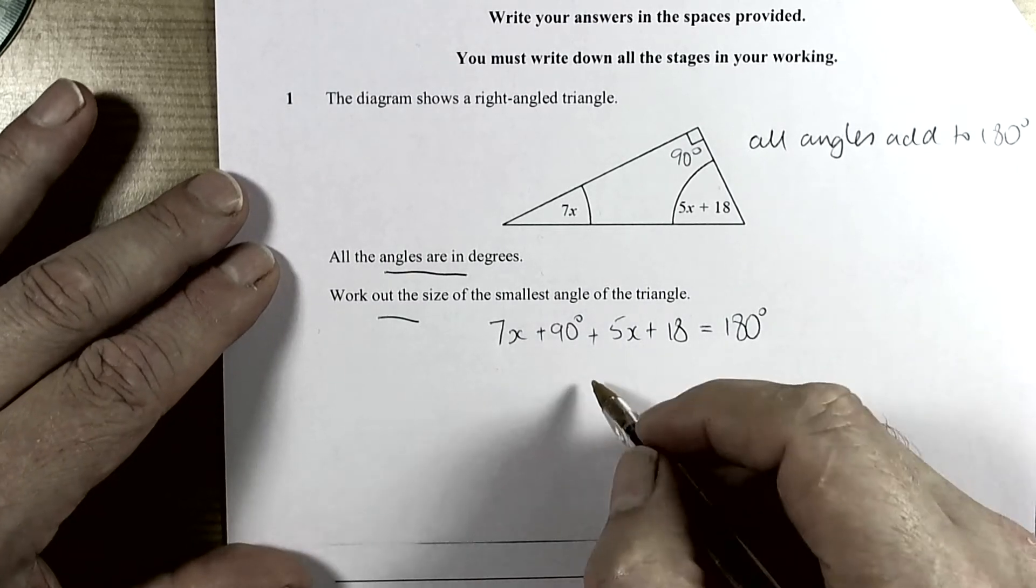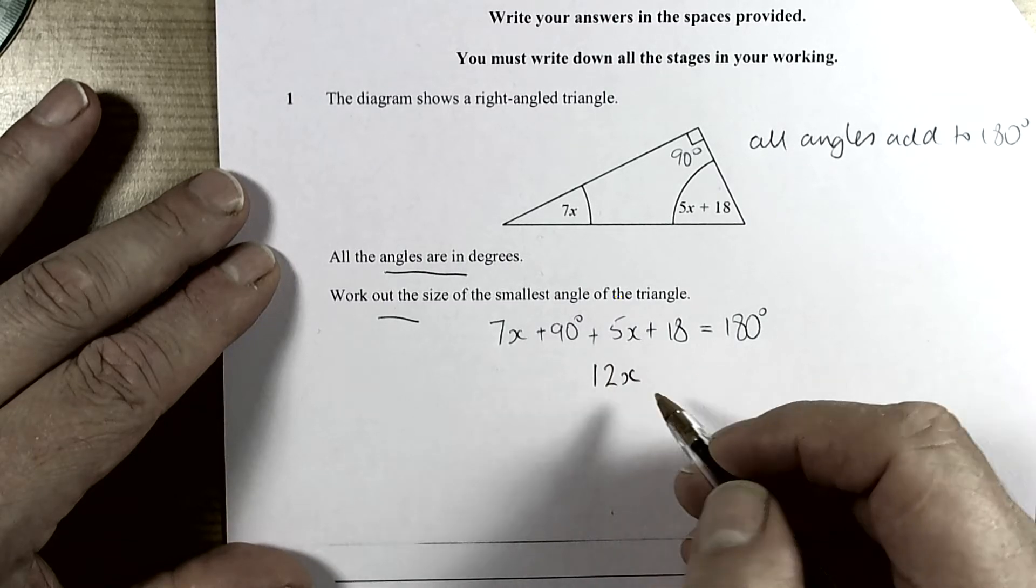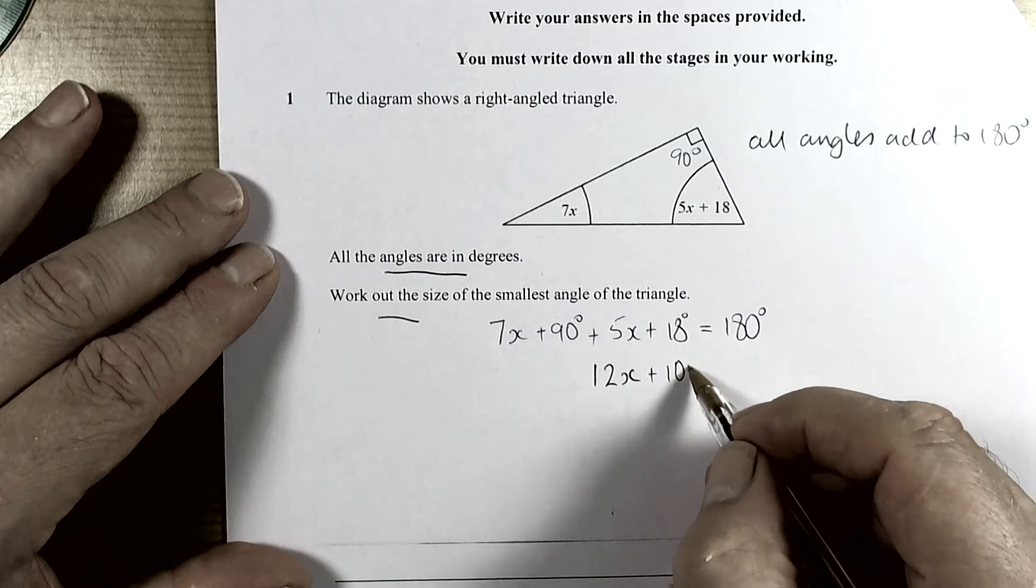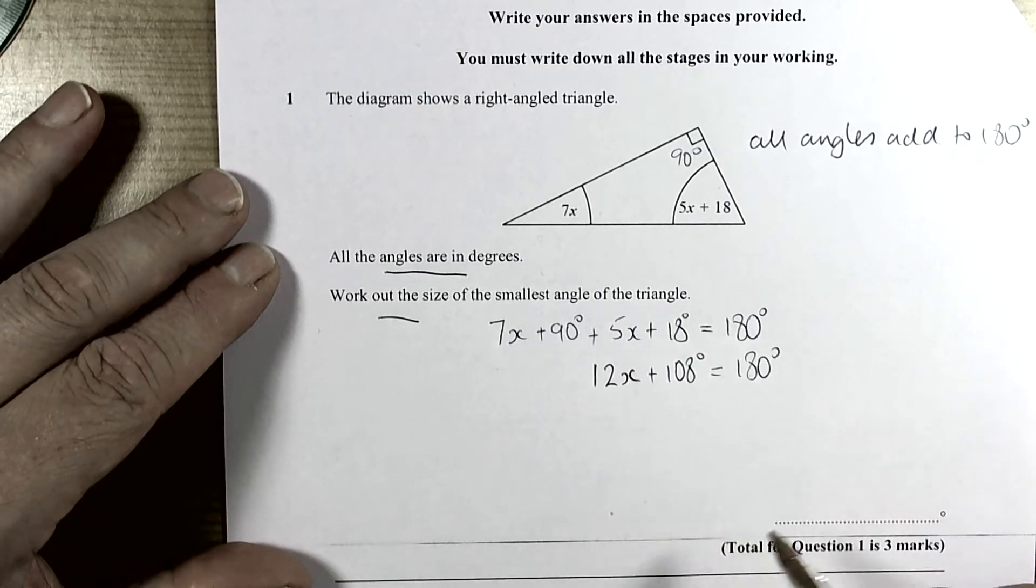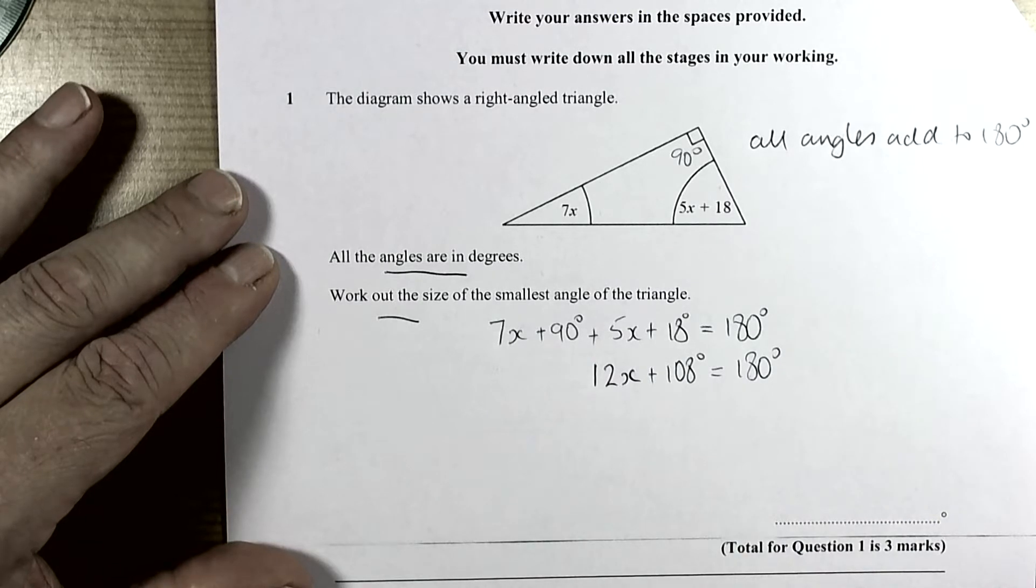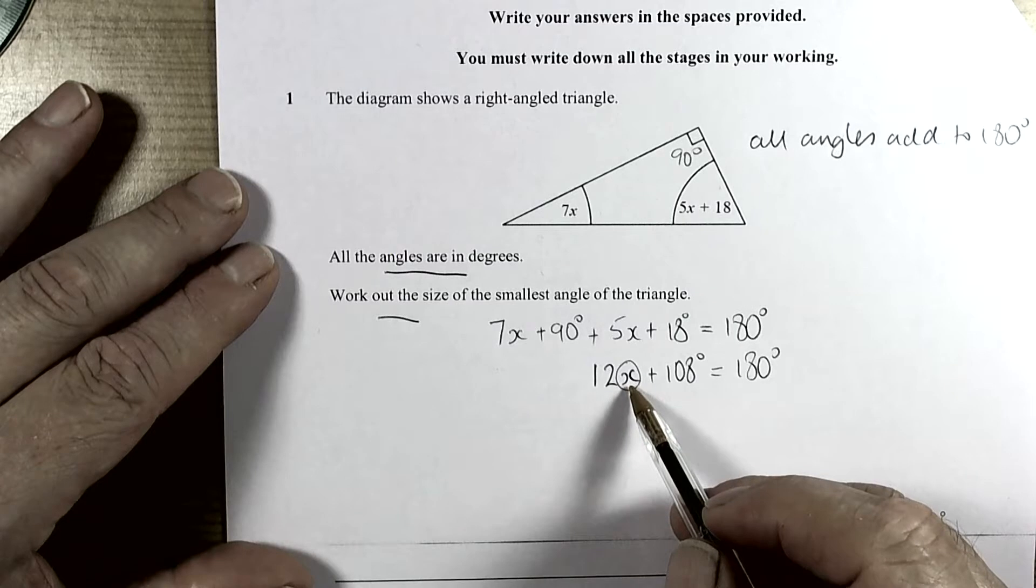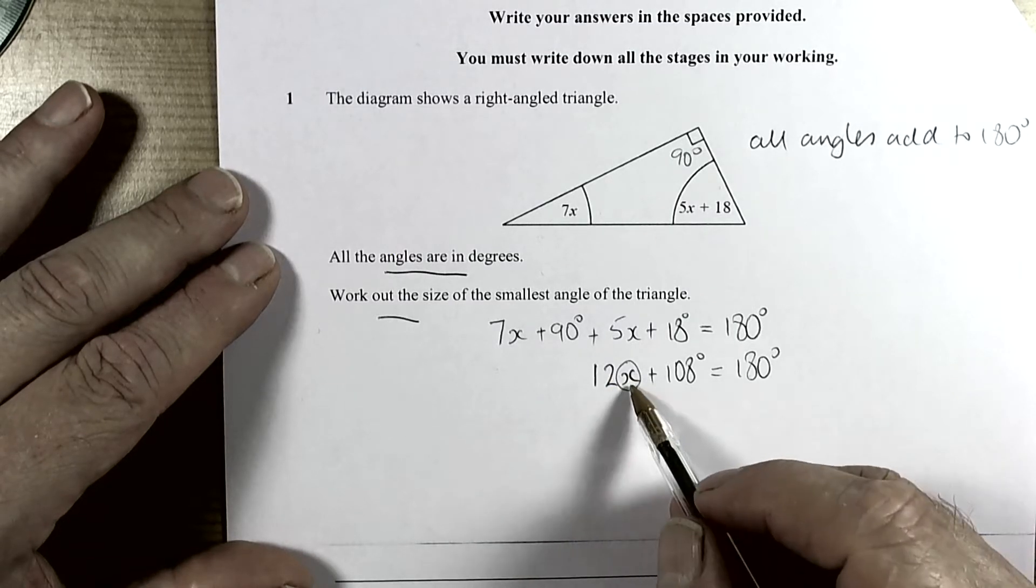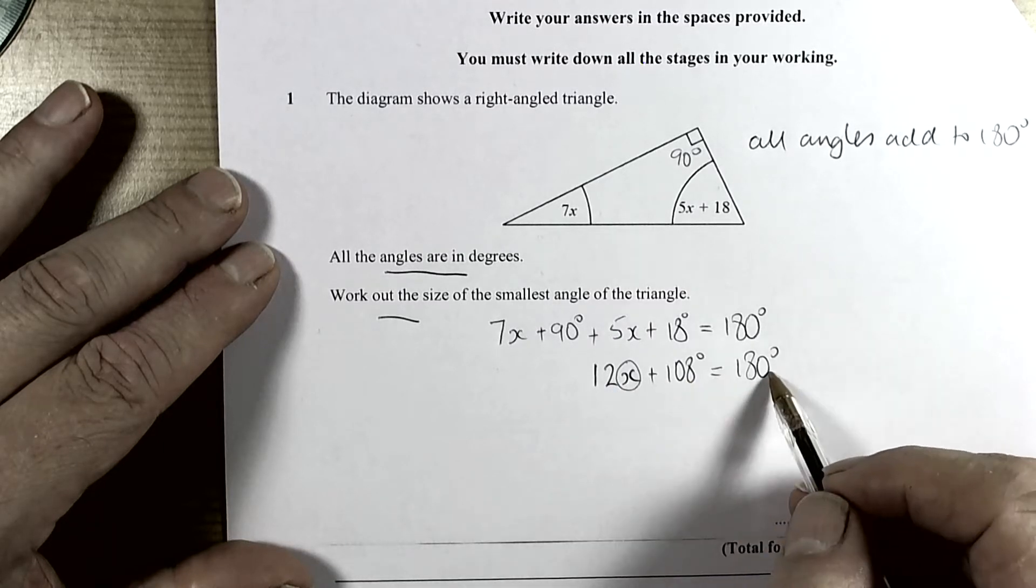We simplify this down, so we've got 7x's plus 5x's which makes 12x's, and we've got 90 degrees plus 18 degrees which makes 108 degrees, and that's going to equal 180 degrees. Like all solving equations, the idea is to make x the subject, so to isolate the x on its own. It's already positive in the term, so we can leave it where it is and move the 108 and the 12 across to the other side.